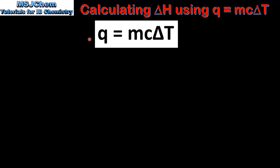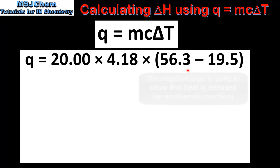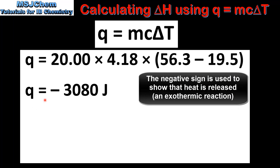Next we will calculate the heat released in the reaction using the equation Q equals MC delta T. In this example, M refers to the mass of water used in the reaction, which is 20.00 grams. C is the specific heat capacity of water, which is 4.18 joules per gram per degree C. Delta T is the temperature change of the water in the test tube. This gives us a value of Q of negative 3080 joules.